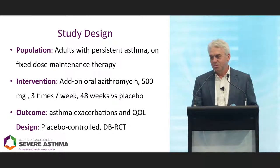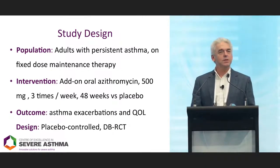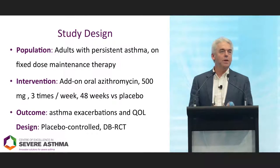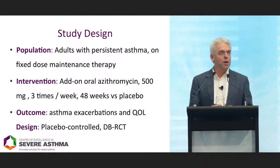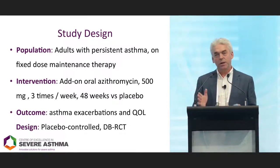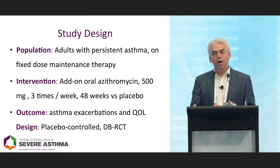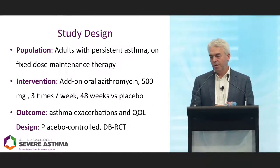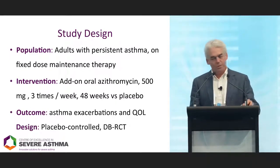These were adults with persistent asthma on fixed-dose maintenance therapy. They were treated with add-on azithromycin 500 milligrams three times a week for 48 weeks, compared to identical placebo. The primary outcomes were asthma exacerbations and quality of life, and it was a double-blind randomised trial.